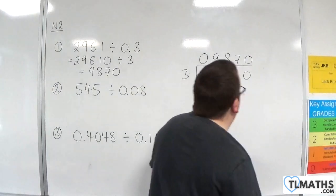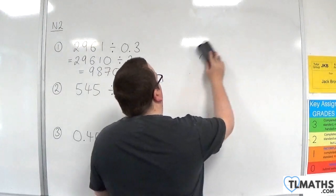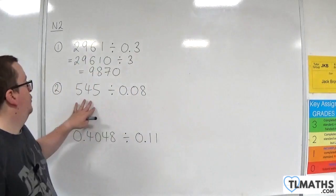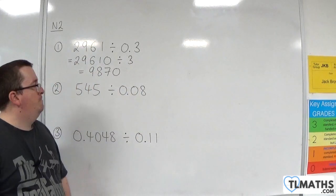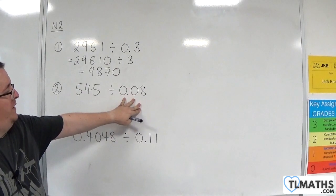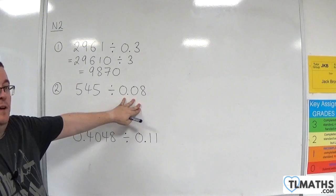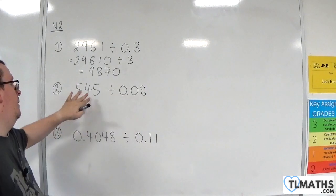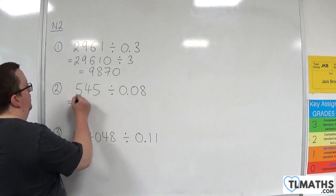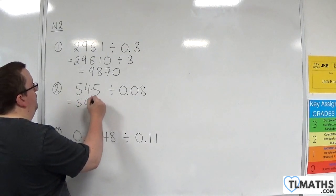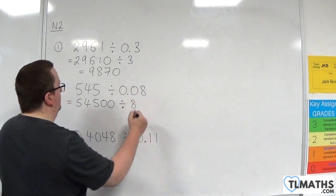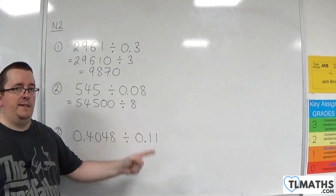Number 2: 545 divided by 0.08. First of all, look at what you're dividing by. In order to get rid of the decimal, I can multiply that by 100, which means I need to multiply 545 by 100 as well. So we're going to have 54,500 divided by 8.